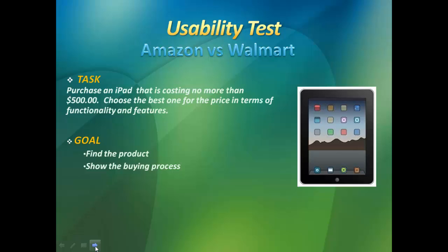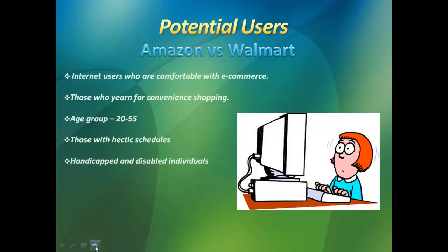Subject X was advised to buy it online. The focus of this task covers two areas: finding the product and showing its buying process. Potential users who usually perform these tasks are internet users worldwide who are comfortable with e-commerce and prefer convenient shopping. It can be either male or female, mostly in the age of 20 to 55.